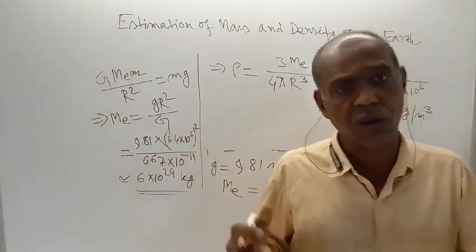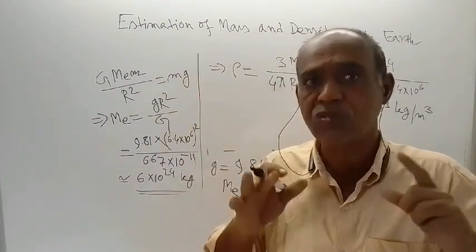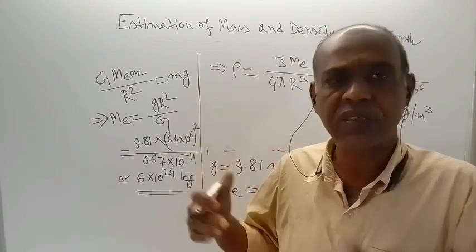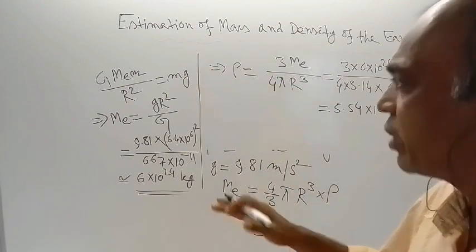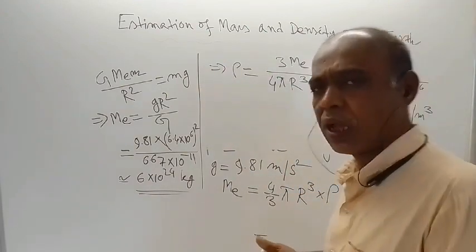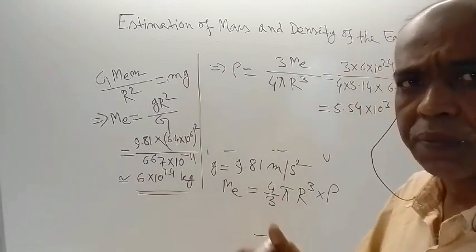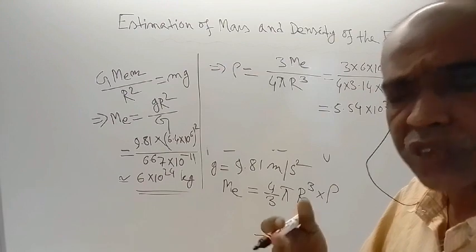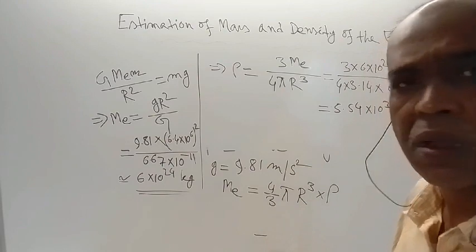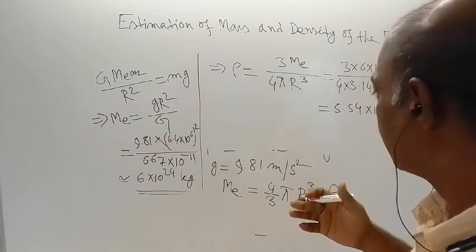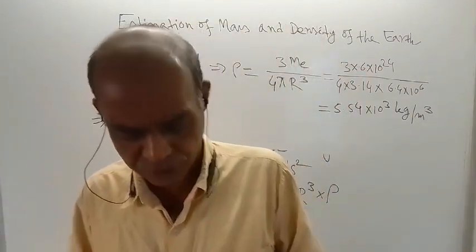We know that density of Earth is not the same at each and every point — but this is the average value. So this way, just by using Newton's universal law of gravitation and Newton's second law of motion, we have been able to estimate the mass of the Earth as well as the density of the Earth. So this is the end of this lecture. Thank you for watching this video.